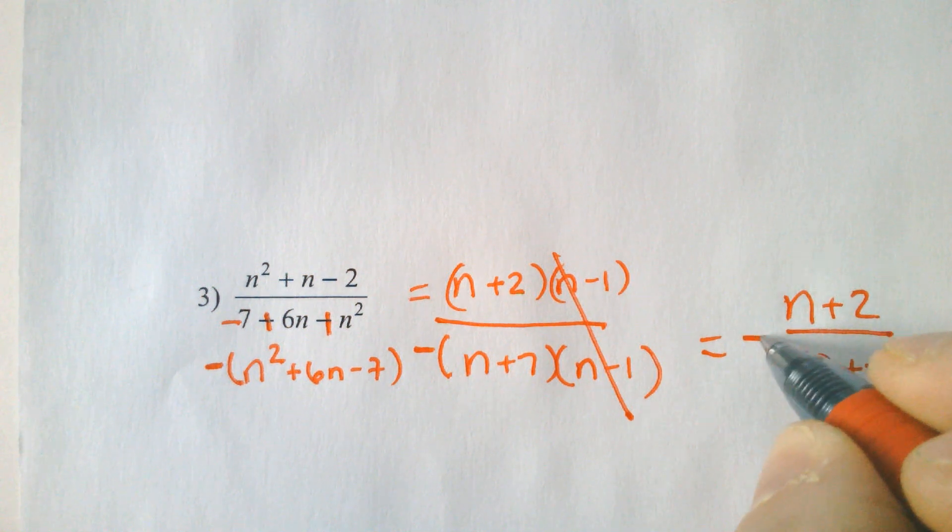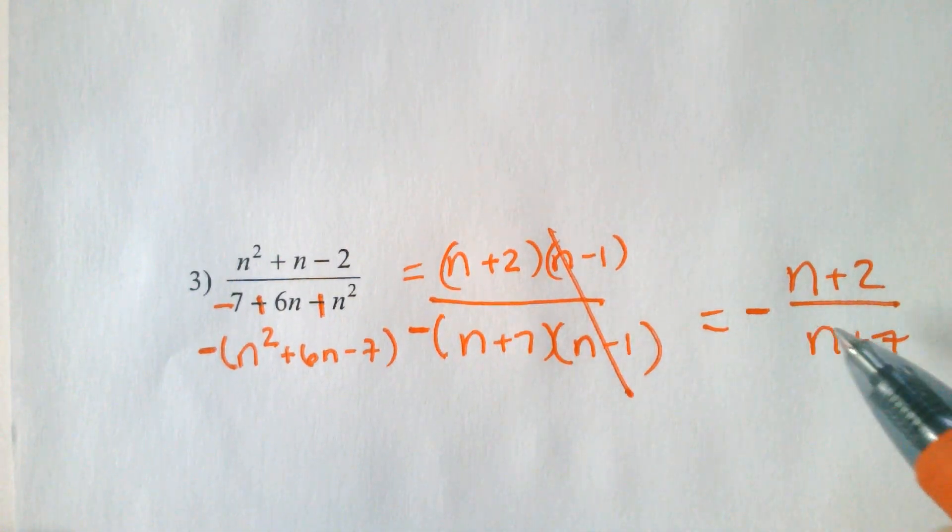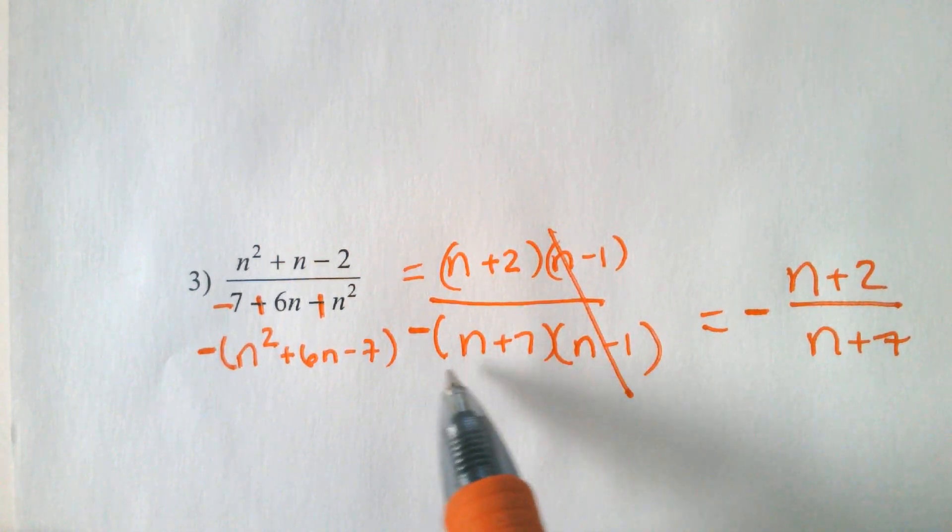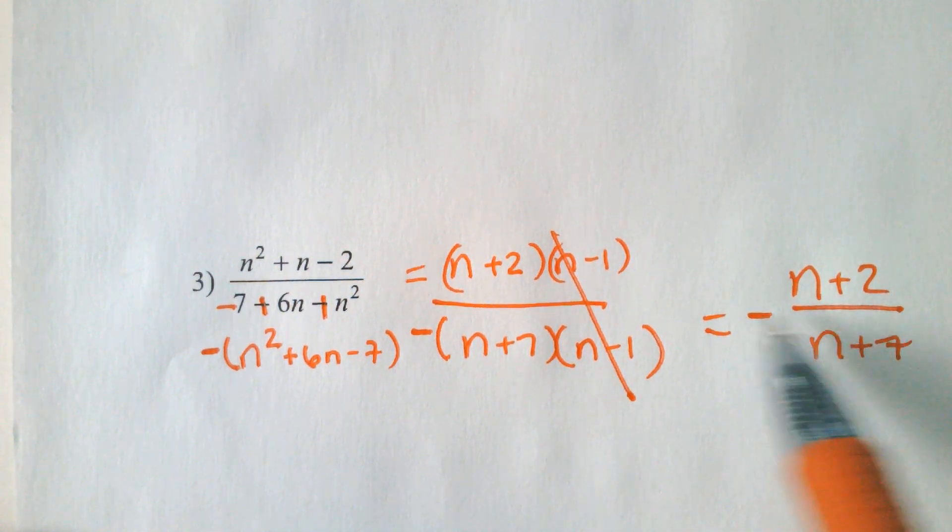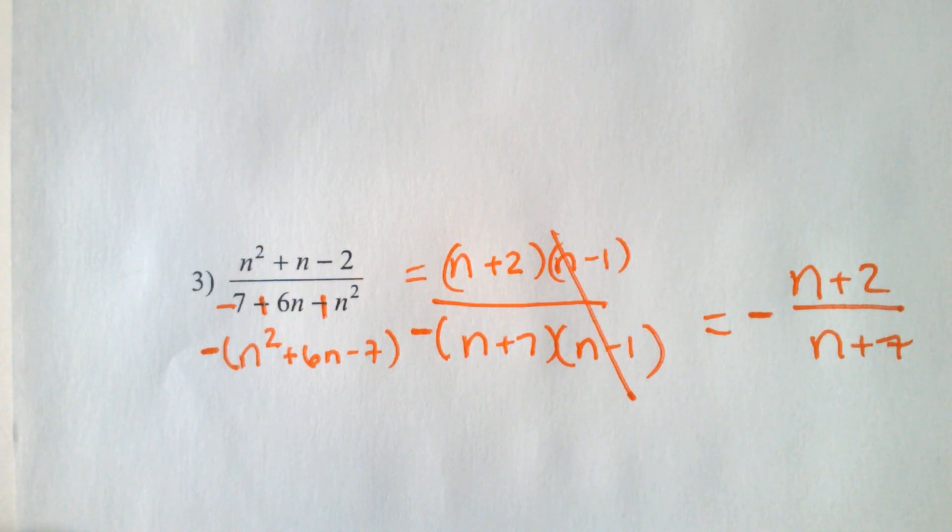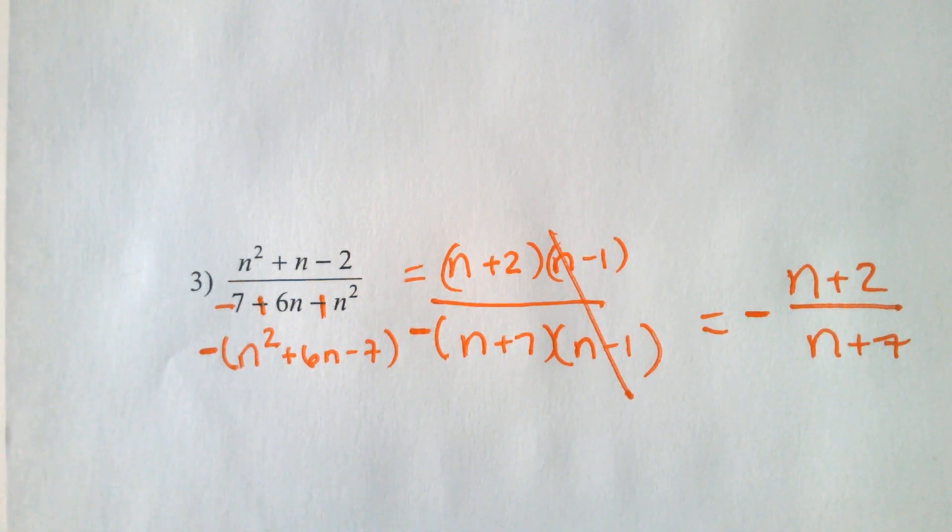A lot of times you'll see a negative in front, but the negative could have also just been on the bottom like it was to begin with or even on the top. But sometimes you see it out front. I don't like doing it because then sometimes I miss it and I think it's still the fraction bar.